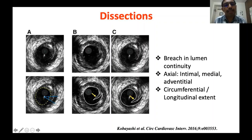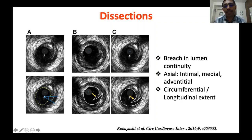Dissection is also classified by circumferential extent — quantified by how many degrees along the circumference it occupies (60 degree, 80 degree, 100 degree dissection), and longitudinal extent — how long it extends (3 mm, 5 mm, etc.). To describe a dissection, we must specify three pieces of information: what is the axial extent, what is the circumferential extent, and what is the longitudinal extent.